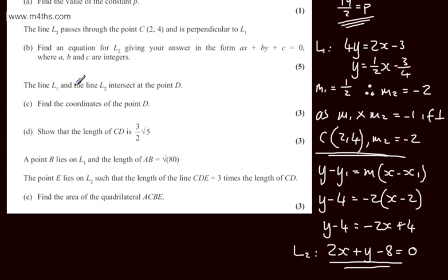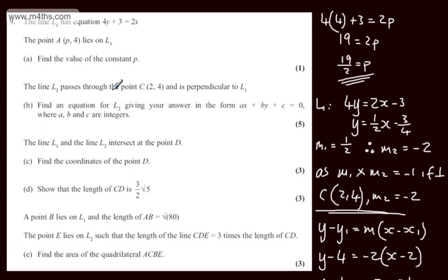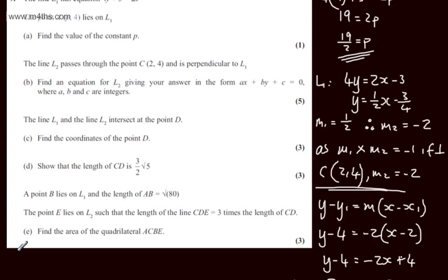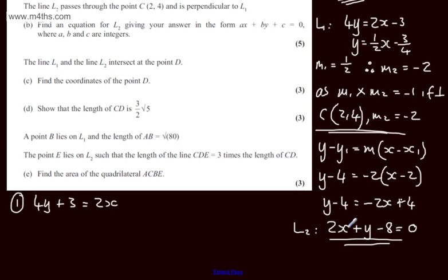We're now told that lines L1 and L2 intersect at the point D. In part C, we're asked to find the coordinates of point D. The question carries three marks. This is simply a case of simultaneous equations. We've got L1, which I'll call equation 1, and L2, which I'll call equation 2. Equation 1 is 4y plus 3 equals 2x.